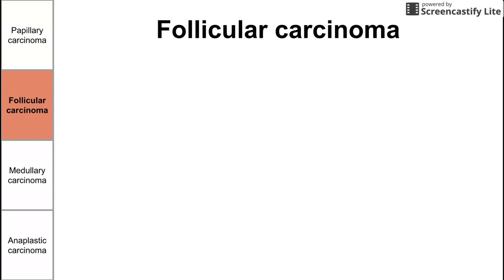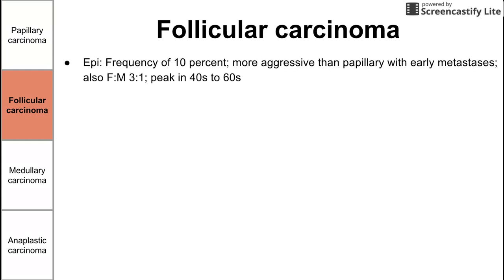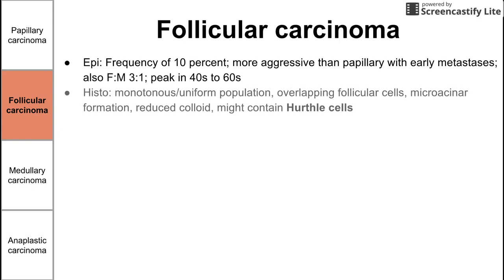Next is follicular carcinoma. It is less frequent but a little more aggressive than papillary, though still less aggressive than medullary. Frequency is about 10%, with the same female to male ratio of 3 to 1, peaking a little older — in the 40s to 60s. On histology, we see a monotonous, uniform population of overlapping cells, microacinar formation, reduced colloid, and sometimes Hurthle cells.